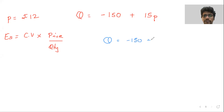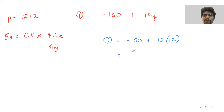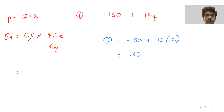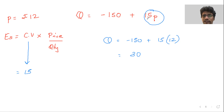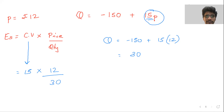Q = -150 + 15 × 12. Solve it: Q is 30. Correct! Now put it in the formula. The coefficient variable is 15. Price is 12, quantity is 30. So elasticity = 15 × 12 / 30 = 6. Elasticity of supply is 6. Easy marks for everyone!